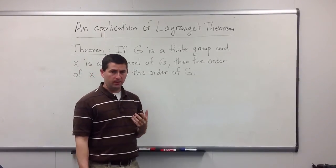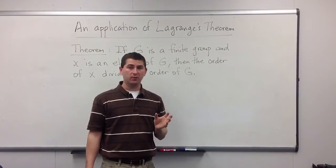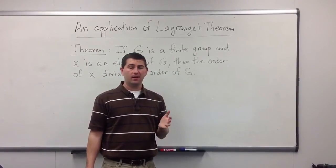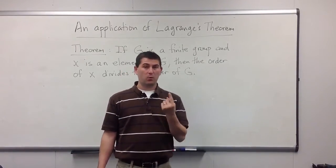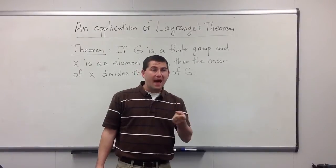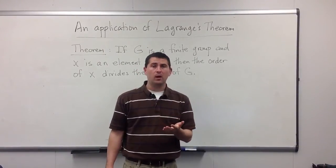So remember, the order of an element is going to be the smallest positive integer we can raise that element to and get back the identity. Now in some cases, we can't do that. For instance, if we're looking at the integers under addition, you take the number 1, well, we keep adding 1 to itself over and over again. When are we going to get the identity, which is 0? Well, never.